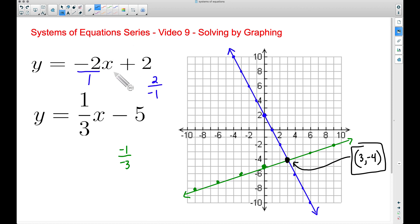Now let's make sure the same thing applies to the second equation. So again, our x value is 3. 1 third of 3 is 1 minus 5. That does give us a y value of negative 4.